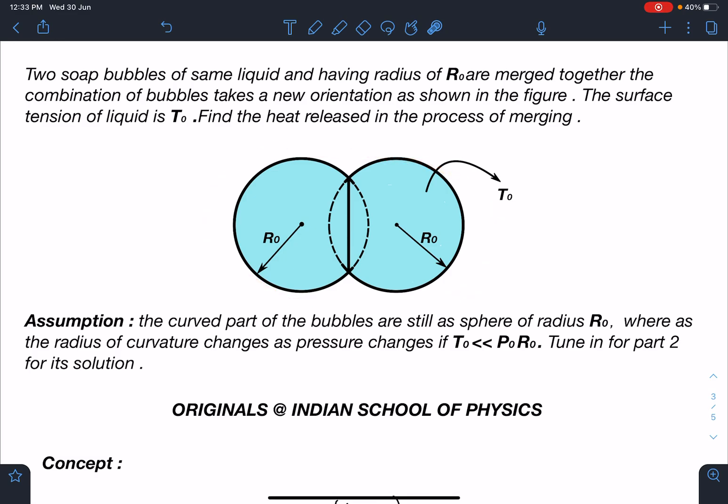In the next part of this problem I am going to solve this problem under the assumption that surface tension value is very small compared to atmospheric pressure into radius. In that assumption you will see that this radius will not be R₀, it will take a new radius. Under that assumption we will solve in part two, so answer will slightly change.